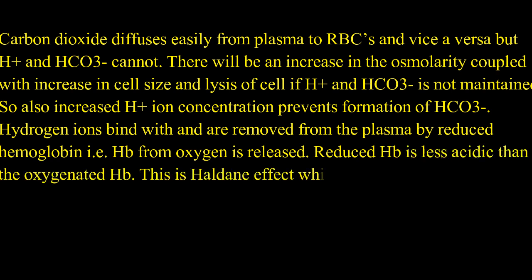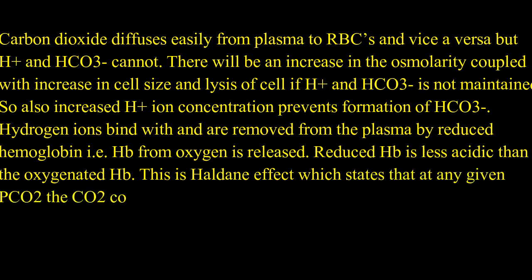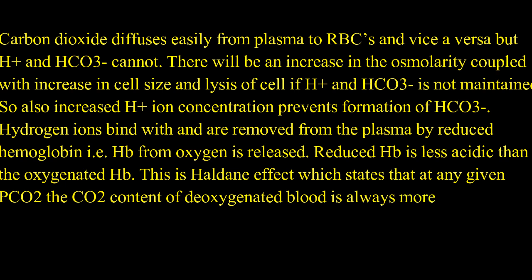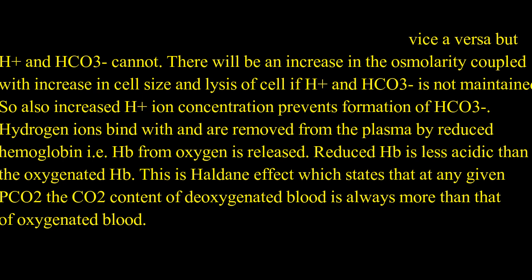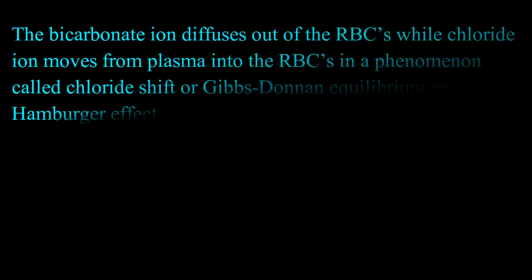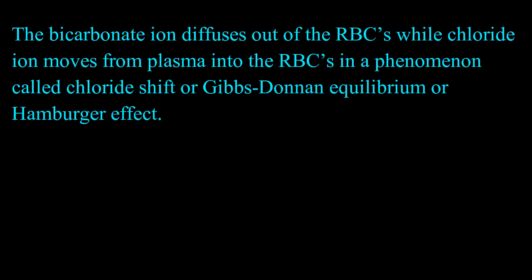Hydrogen ions bind with and are removed from the plasma by reduced hemoglobin, that is hemoglobin from which oxygen is released. Reduced hemoglobin is less acidic than oxygenated hemoglobin. This is the Haldane effect, which states that at any given partial pressure of carbon dioxide, the carbon dioxide content of deoxygenated blood is always more than oxygenated blood. The bicarbonate ion diffuses out of the RBCs while chloride ion moves from plasma into the RBCs in a phenomenon called chloride shift, or Gibbs-Donnan equilibrium, also called the hamburger effect.